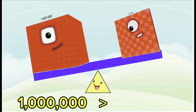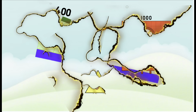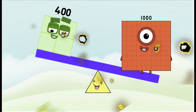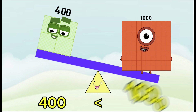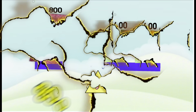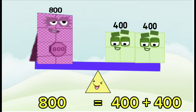One million is greater than one hundred thousand. Four hundred is less than one thousand. Eight hundred is equals to four hundred plus four hundred.